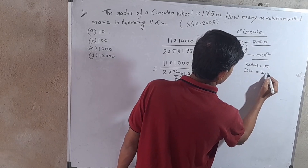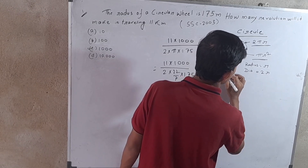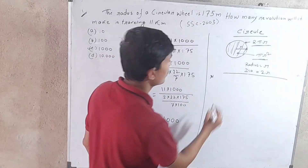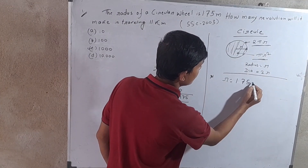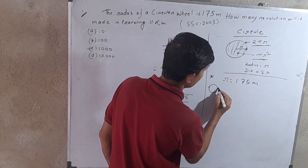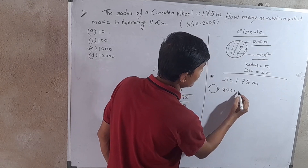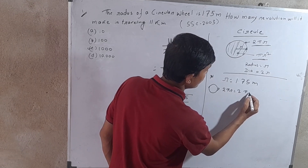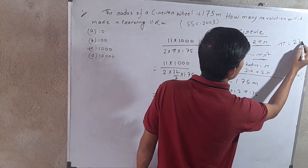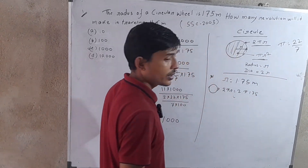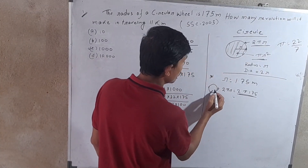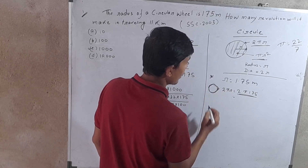The diameter is 2r, that is 2 into r. For this circular wheel problem, r is 1.75 m. So the circumference is 2πr = 2 into pi into 1.75. Using pi = 22/7, we compute 2 into 22 by 7.